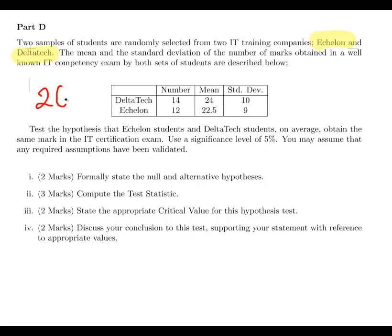So we have 14 at DeltaTech and 12 at Echelon, so the combined sample size there is 26. Small sample, okay, that's the first key tell there. Now the mean and standard deviation is the sample mean and sample standard deviation of those two groups, so we're going to use that in calculating our test statistic. Now test the hypothesis that both groups of students on average obtain the same mark in the IT exam.